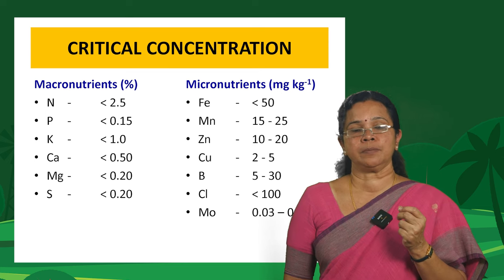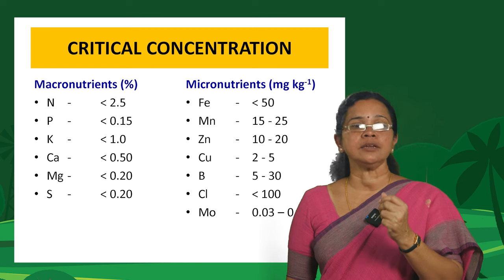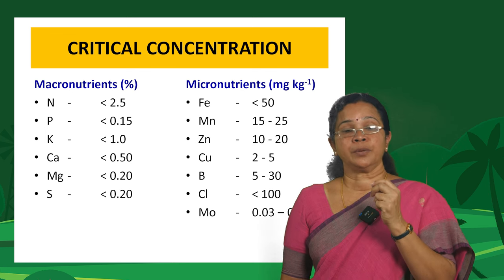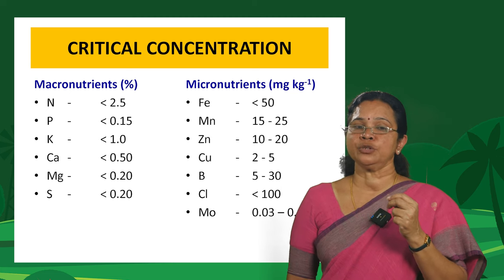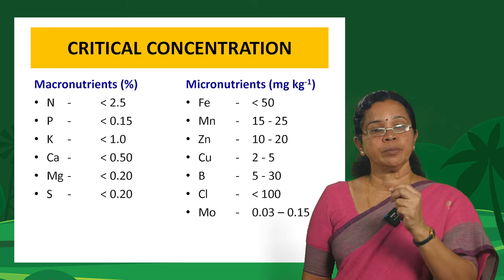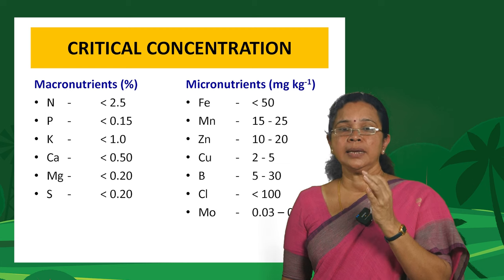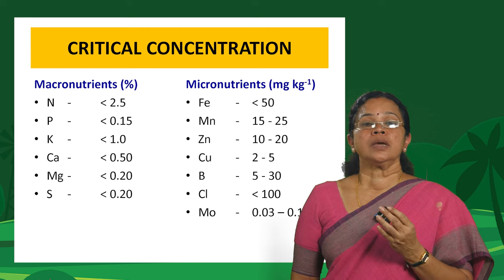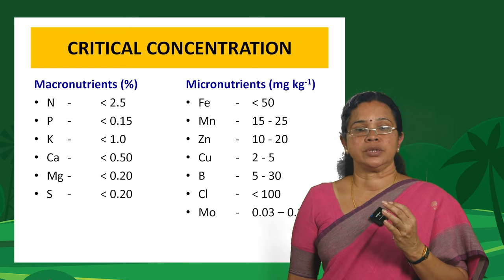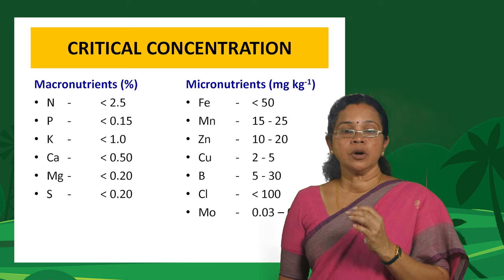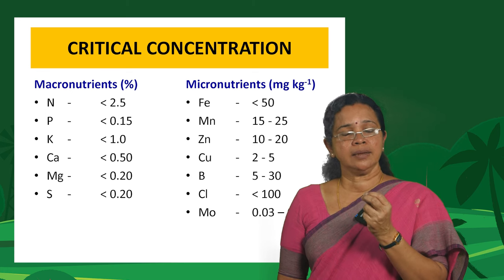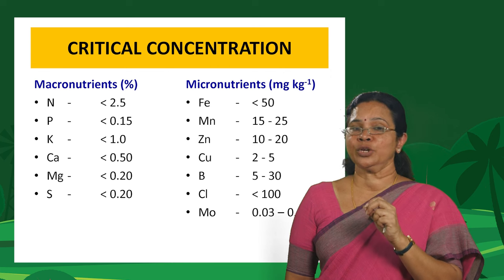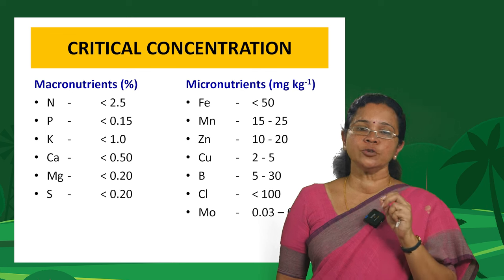Critical concentration means that particular concentration below which a plant will start to show deficiency symptoms. Among macronutrients, it has a higher critical concentration value — nitrogen, phosphorus and potassium are slightly higher than calcium, magnesium and sulfur. For micronutrients, the critical concentration is much lesser, expressed in milligrams per kg (formerly ppm). Molybdenum has an extremely low critical concentration — we can even categorize it as an ultra-micronutrient — yet it is still categorized as an essential nutrient for crops.